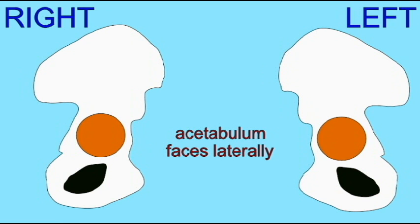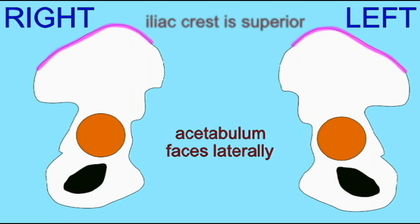The acetabulum, the socket for the hip joint, must face laterally. If it faced medially, then the legs would exit the hip medially, and obviously this would be very different from the human condition.